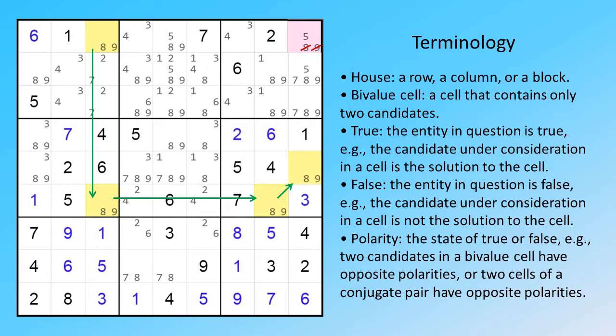Polarity: the state of true or false. For example, two candidates in a by-value cell have opposite polarities, or two cells of a conjugate pair have opposite polarities.